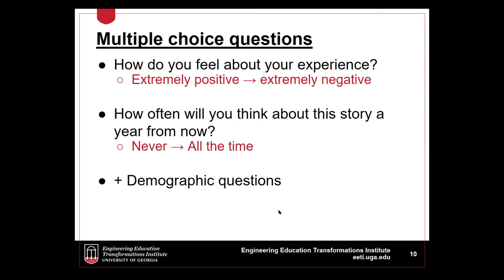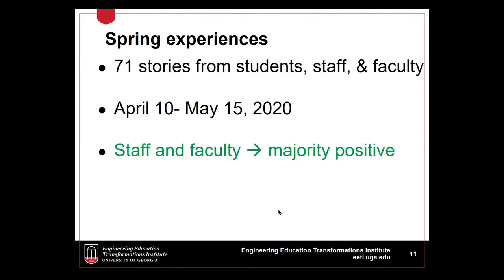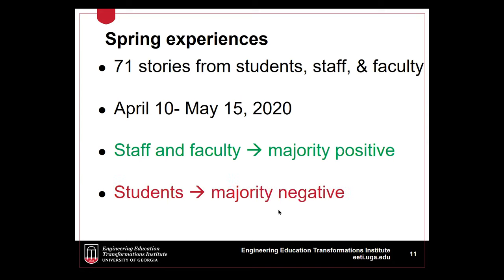So how did our college experience the transition to online learning? We collected 71 stories in the spring of 2020 and a further 71 in the fall. In the spring, the majority of faculty and staff stories were positive, but unfortunately the majority of student stories were negative. Looking closely at the data, one possible explanation was that faculty had agency in how they responded to the crisis — they had to go online, but could decide what that looked like — whereas students were on the receiving end of these changes.